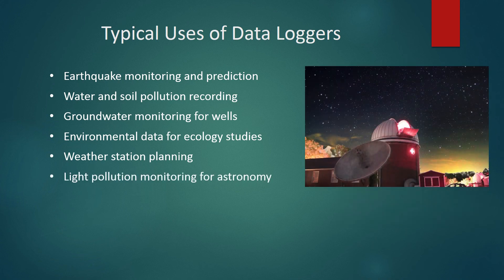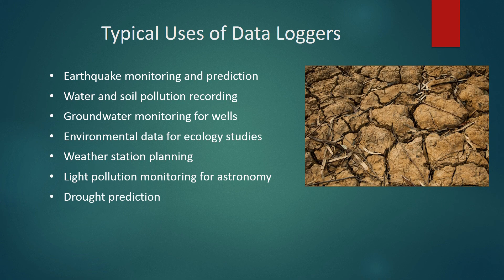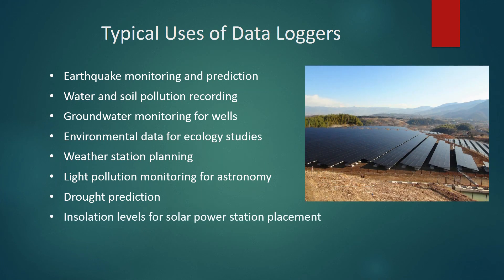Light pollution has a heavy impact on terrestrial telescopes, so when planning the placement of a new observatory — or for a hobbyist looking for a good spot — data loggers can be used to measure the intensity of local light pollution. Droughts can have a serious impact on local and global resources, so the best way to prepare for a drought is to predict it using data loggers and remote sensing technologies. Insolation, or incoming solar radiation, is the amount of energy reaching the ground from the sun. Monitoring this is crucial when finding a location to build a solar power plant and can have a large impact on the amount of power generated.